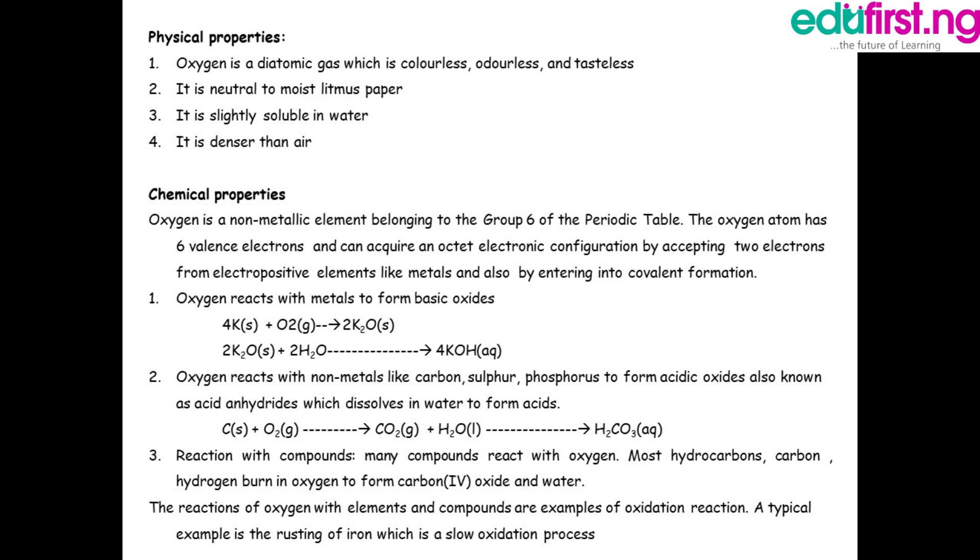Chemical properties of oxygen: Oxygen is a non-metallic element belonging to the group six elements in the periodic table. The oxygen atom has six valence electrons. Six valence electrons means that there are six electrons in its outermost shell. Now you note that oxygen needs two electrons to complete or to acquire an octet electronic configuration, and it will acquire that from metals that have two valence electrons in the outermost shell because they are ready to give us the two electrons. Oxygen can also undergo covalent formation by sharing electrons with other elements.